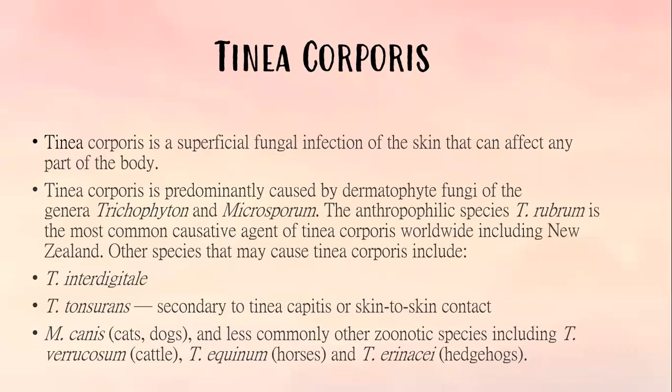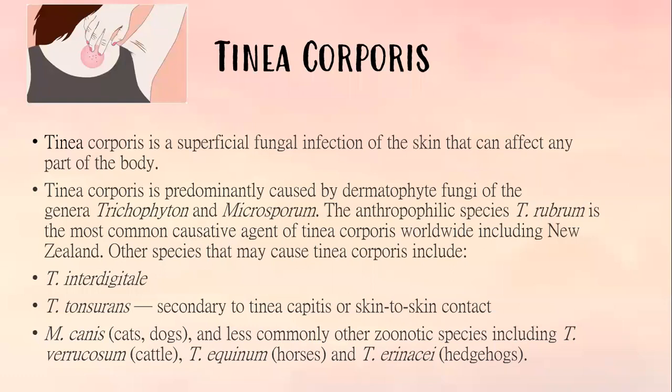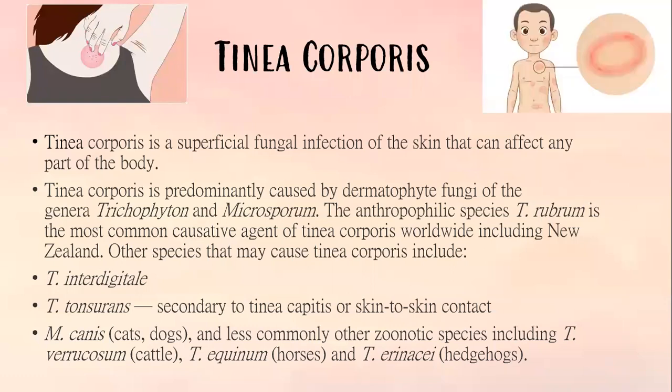The next type of tinea is tinea corporis. This is a superficial fungal infection of the skin that affects any part of the body. It is predominantly caused by the dermatophyte fungi of the genera trichophyton and microsporum. The anthropophilic species trichophyton rubrum is the most common causative agent of tinea corporis, including in New Zealand.